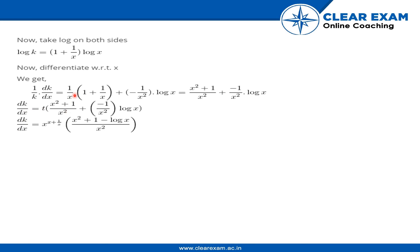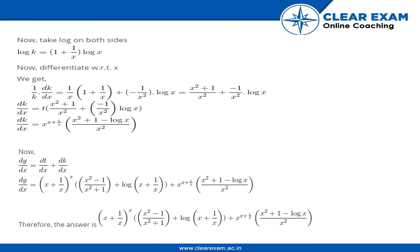Cross-multiplying k to the other side gives dk/dx equals x^(x + 1/x) times (x² + 1 - log x) all upon x². Since y equals t plus k, differentiating with respect to x gives dy/dx equals dt/dx plus dk/dx. Putting in the values of dt/dx and dk/dx: